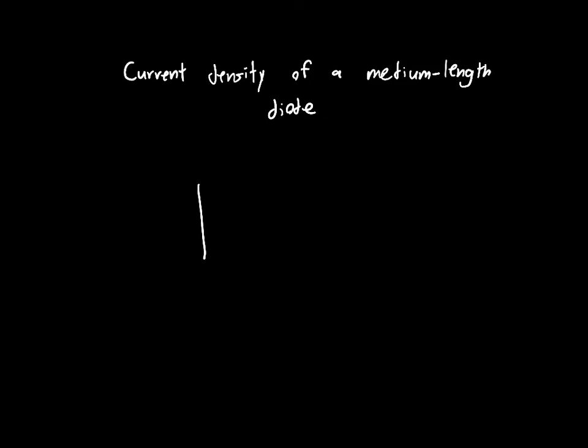And what do I mean by medium length? Well, I mean if we've got a p-n junction diode with a p-side and an n-side, and we know that the holes, if we just draw the depletion region real quick, we know that the holes will diffuse over to the n-side.